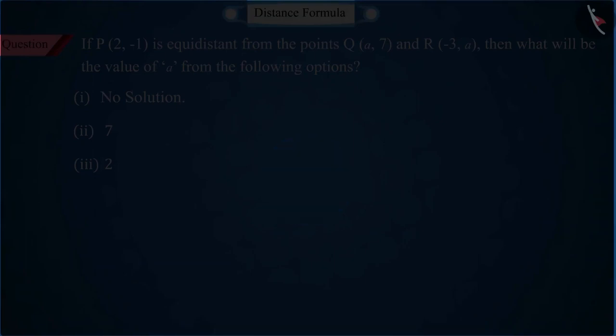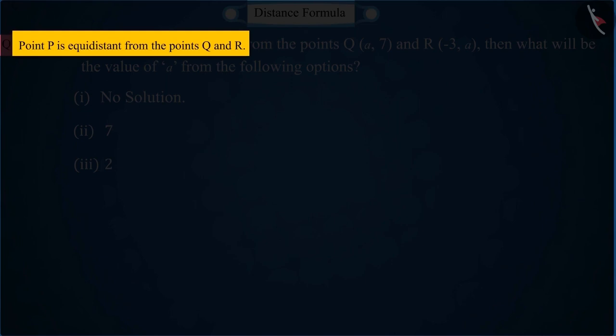From the question, we get to know that point P is equidistant from the points Q and R. Let's make an imaginary picture of it, which somewhat looks like this.